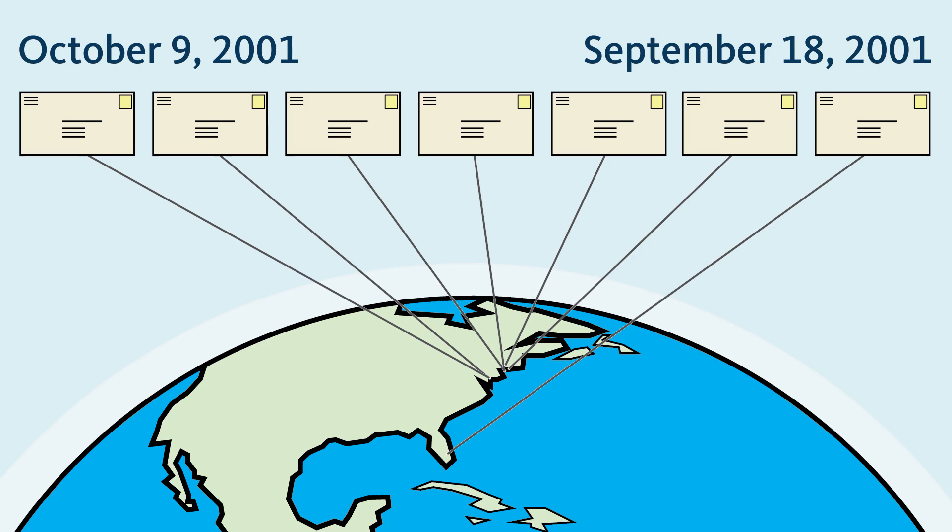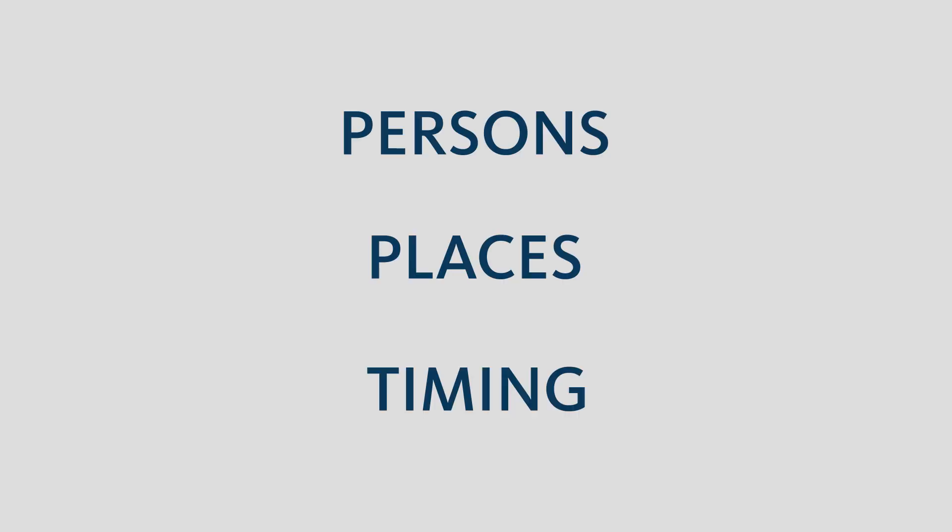Next, let's get into the actual epidemiology. Remember, we use three key terms in epidemiology: persons, places, and timing. Let's apply these to the anthrax example using the CDC report.